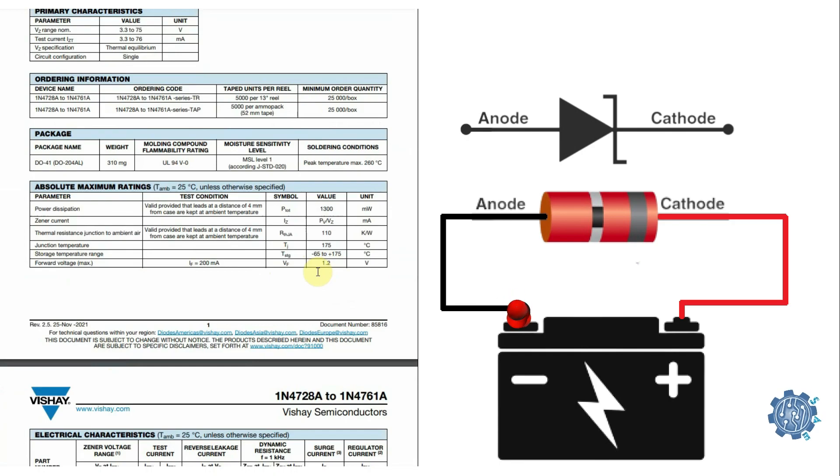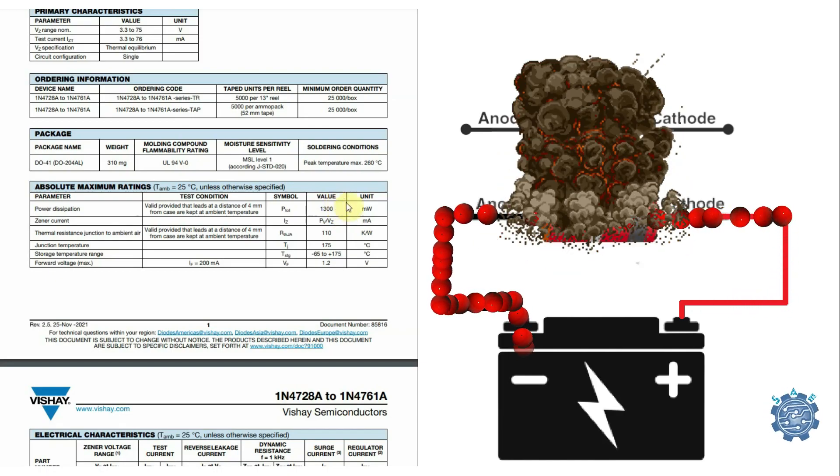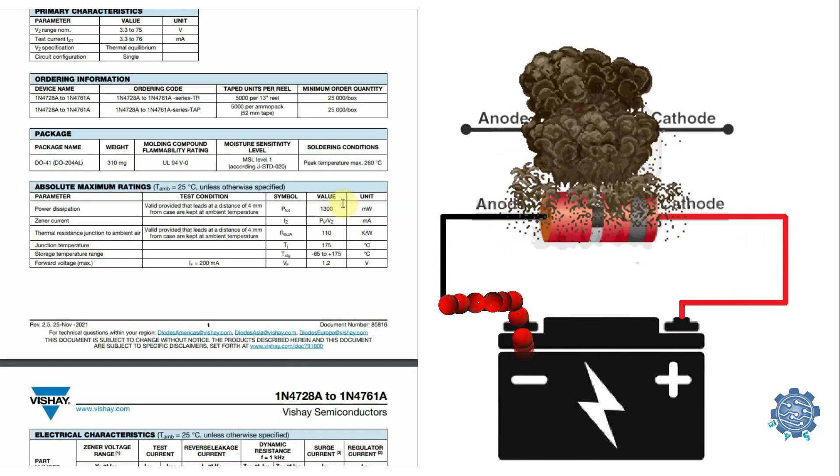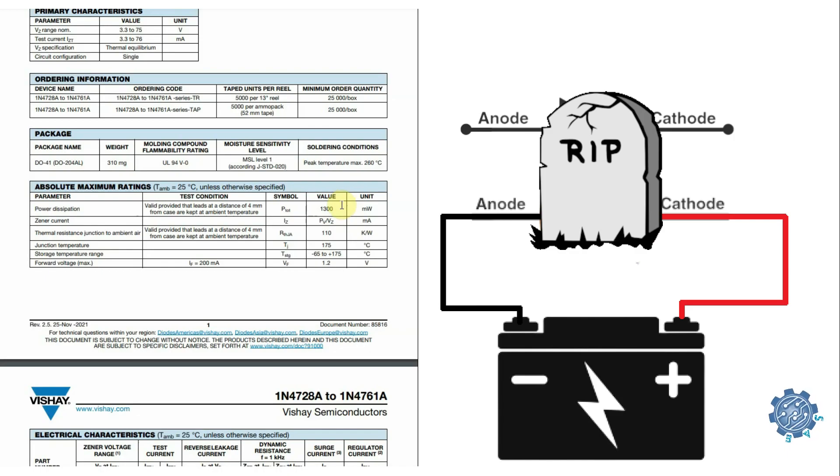Another important parameter is the maximum power dissipation which indicates the amount of power that the diode can safely dissipate without damage. If the power dissipated in the diode exceeds this rating the diode can overheat and fail. To determine the maximum power dissipation of a Zener diode we can use the following formula: power equals voltage multiplied with current.